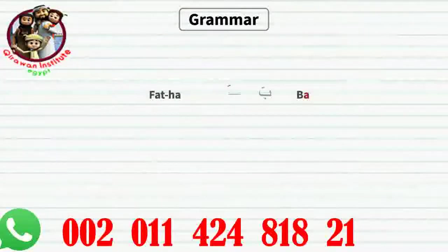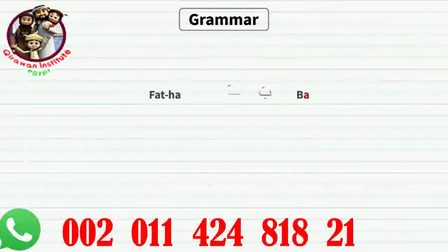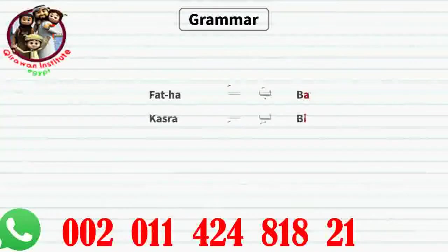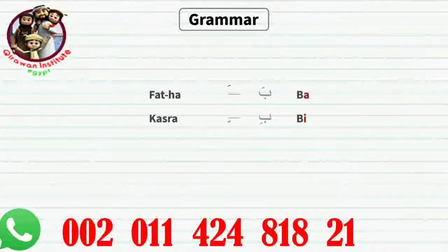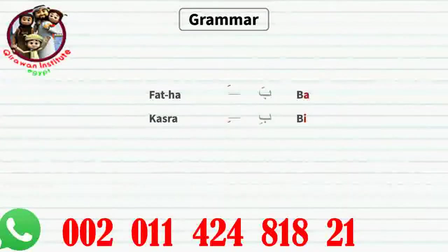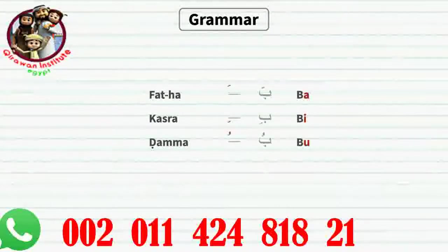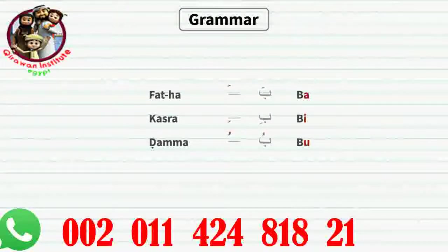Fathah: it adds an 'a' sound to the letter it is added to. For example, 'b' becomes 'ba'. Kasrah: it adds an 'e' sound to the letter it's added to. For example, 'b' becomes 'bi'.